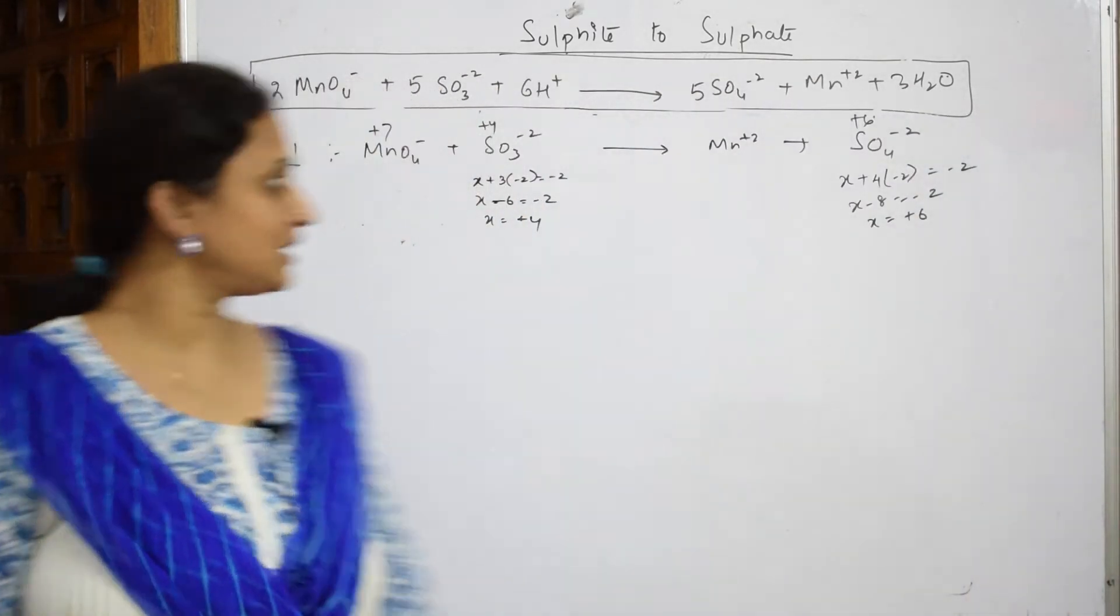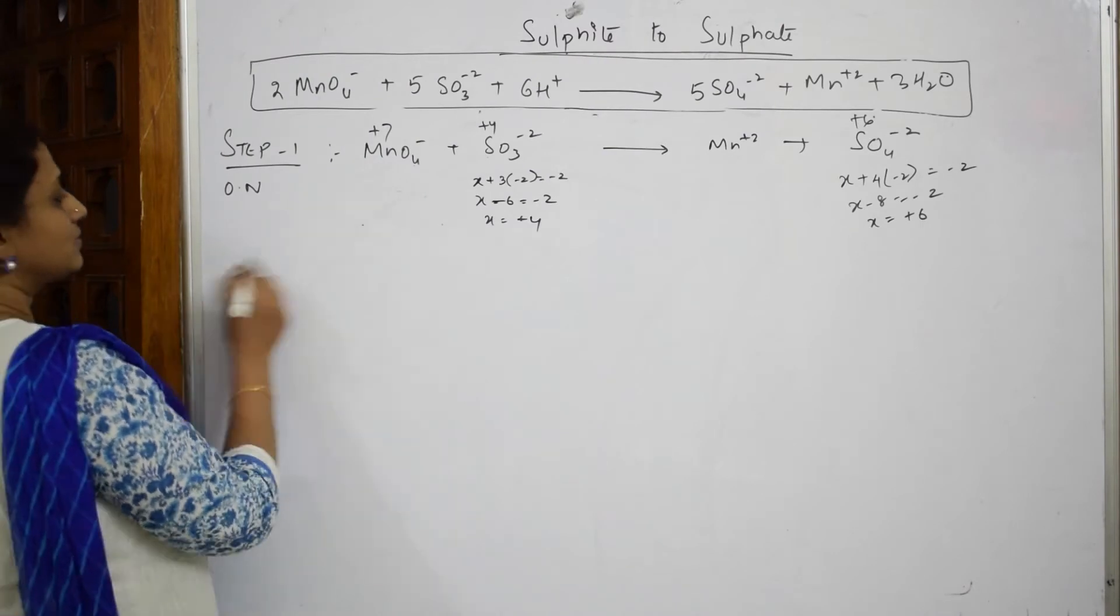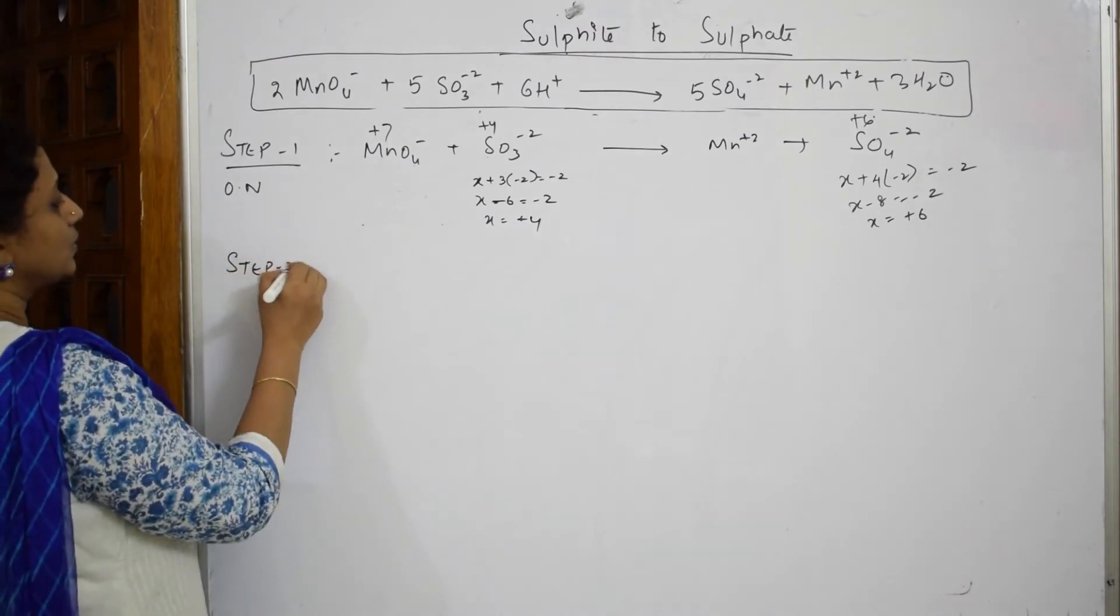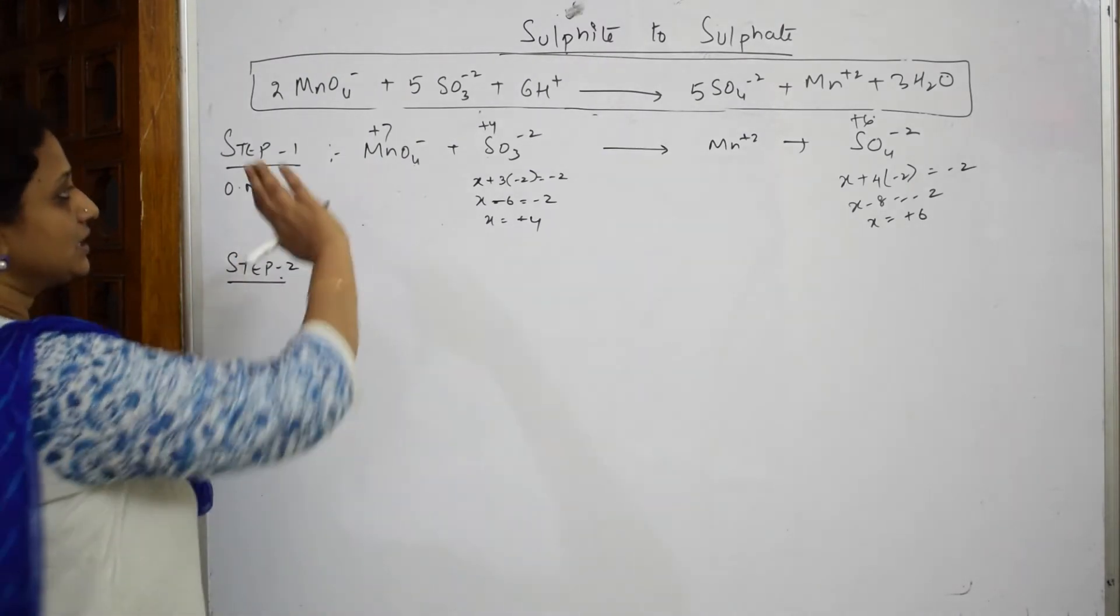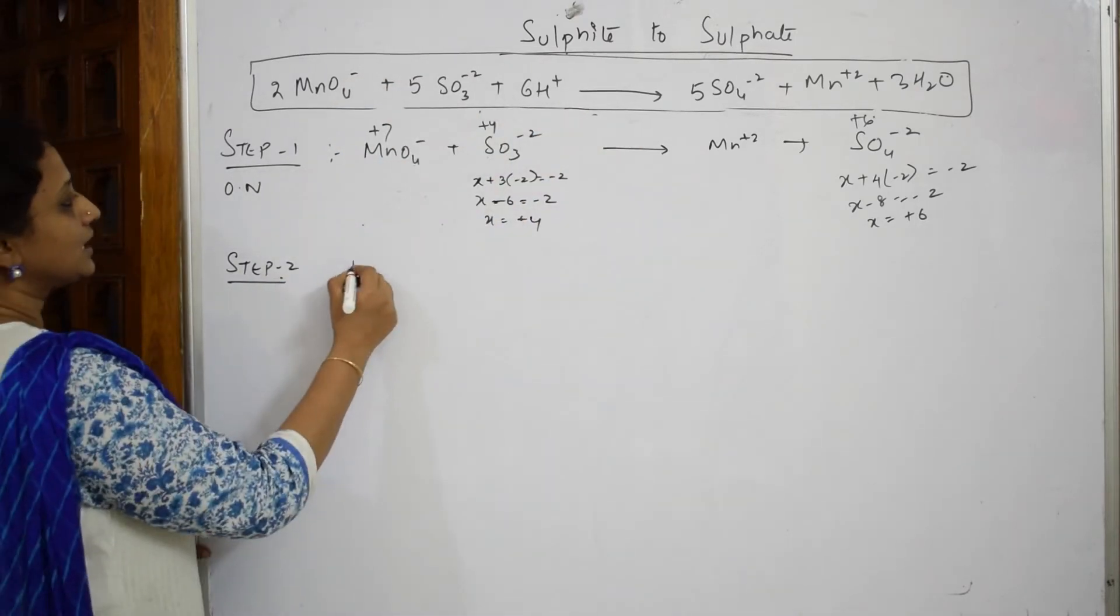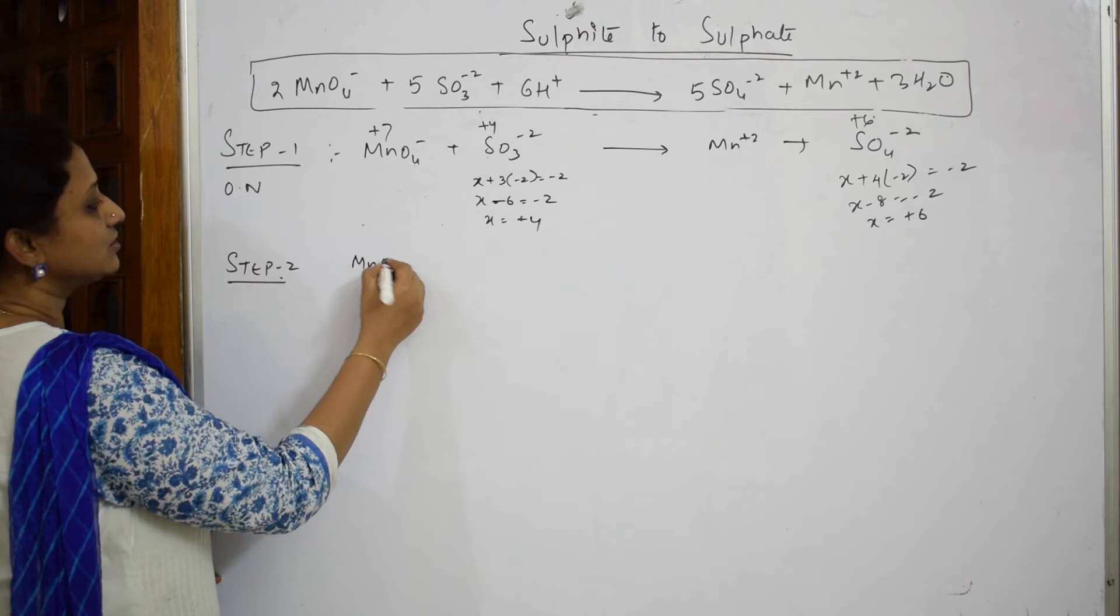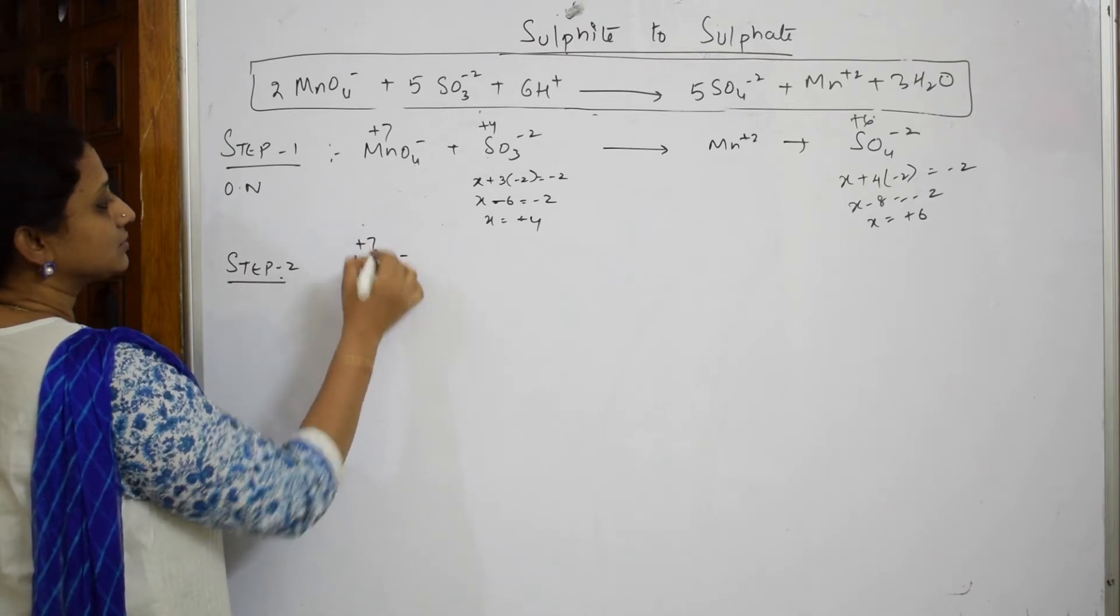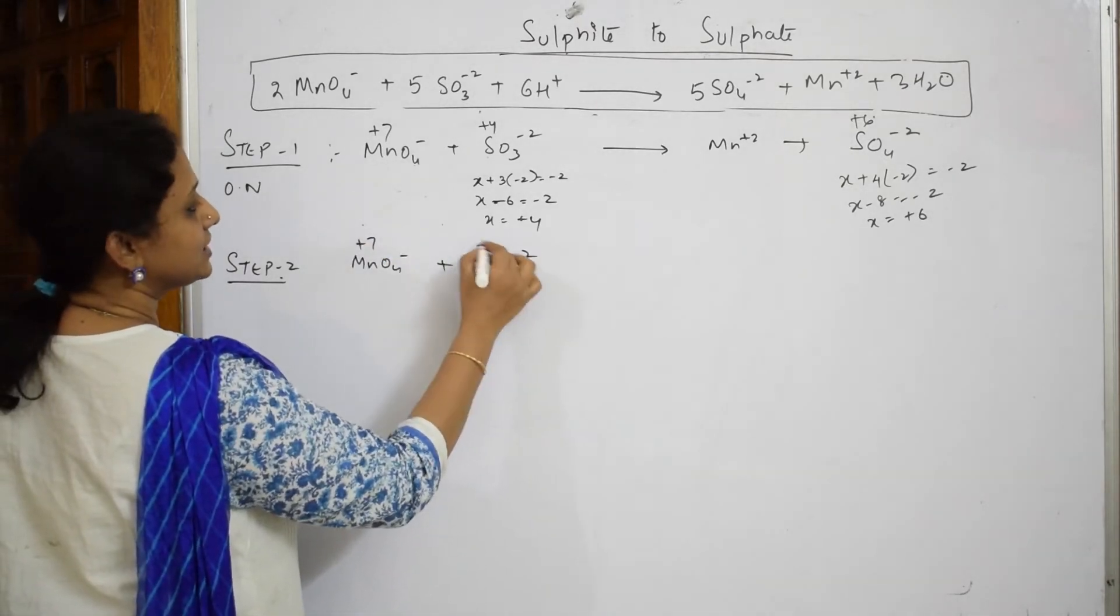In step 2 what should I do? First important thing, see which is undergoing oxidation which is undergoing reduction. Now I am going to write the same reaction here with oxidation states which I calculated.